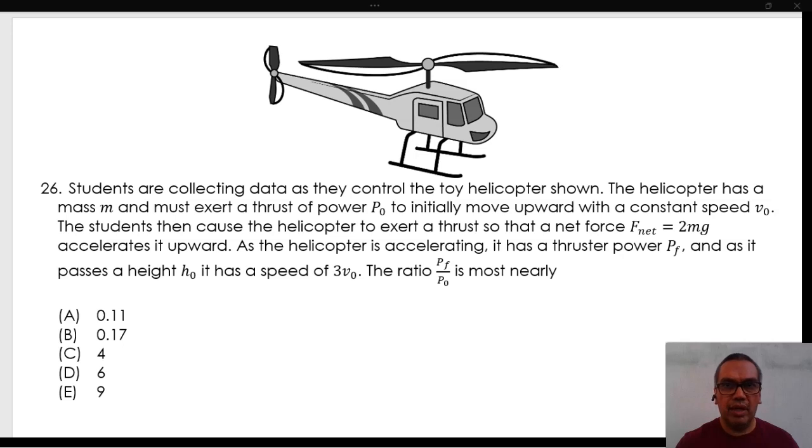Students are collecting data as they control the toy helicopter shown. The helicopter has a mass m and must exert a thrust of power p0 to initially move upward with a constant speed v0.